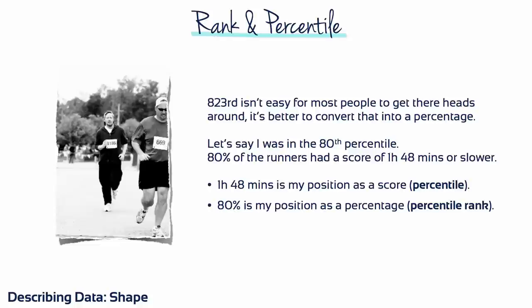823rd isn't easy for most people to get their heads around. It's better to convert that into a percentage. Let's say I was in the 80th percentile. 80% of the runners had a score of 1 hour and 48 minutes or slower. 1 hour and 48 minutes is my position as a score, while 80% is my position as a percentage.